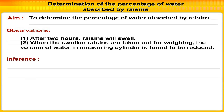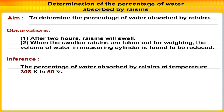Inference: The percentage of water absorbed by raisins at a temperature of 308 Kelvin is 50%.